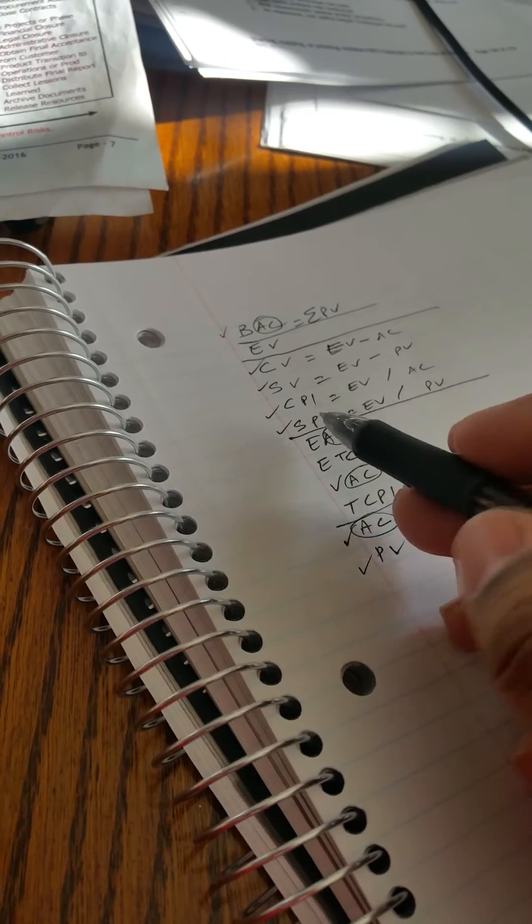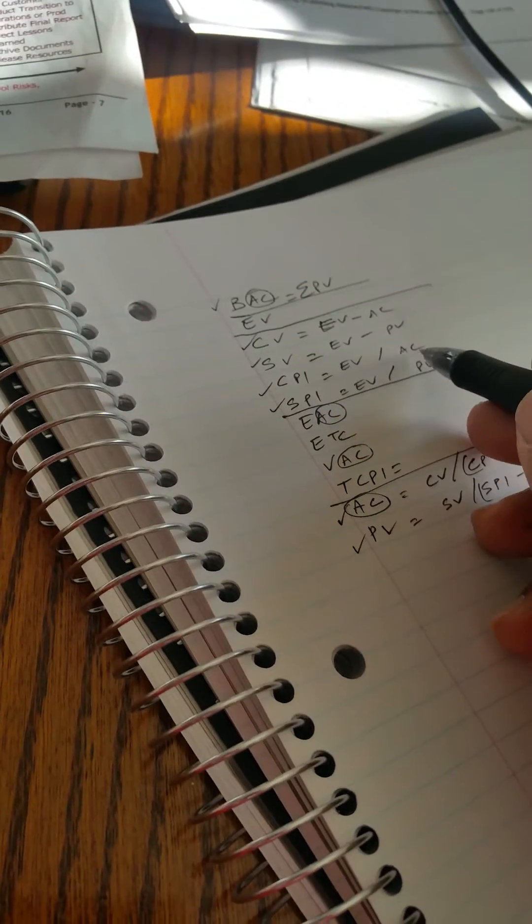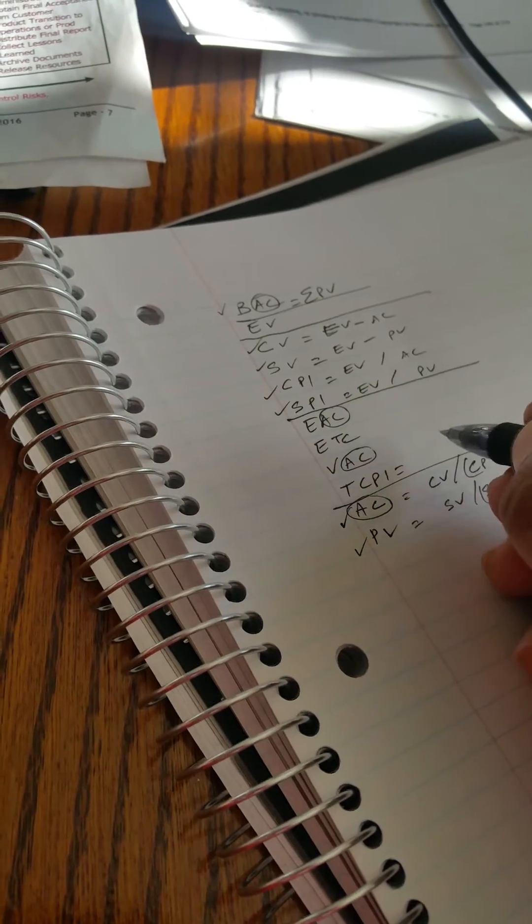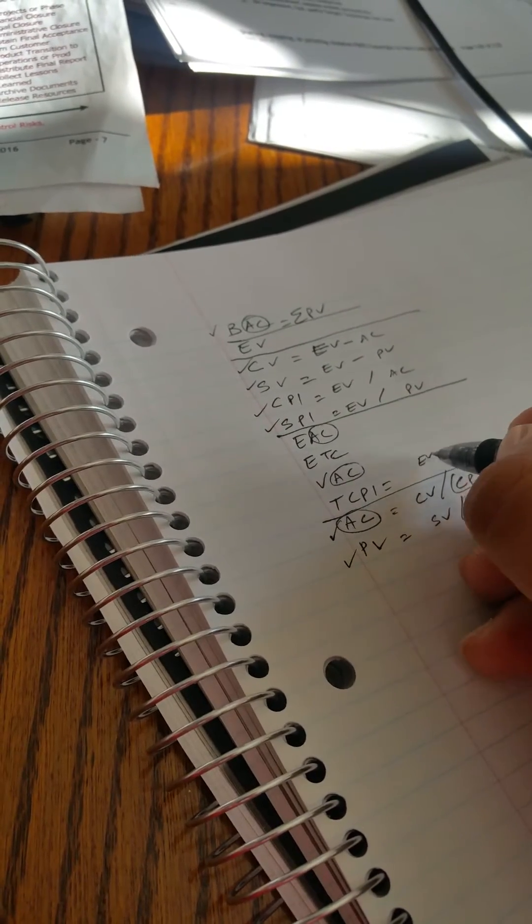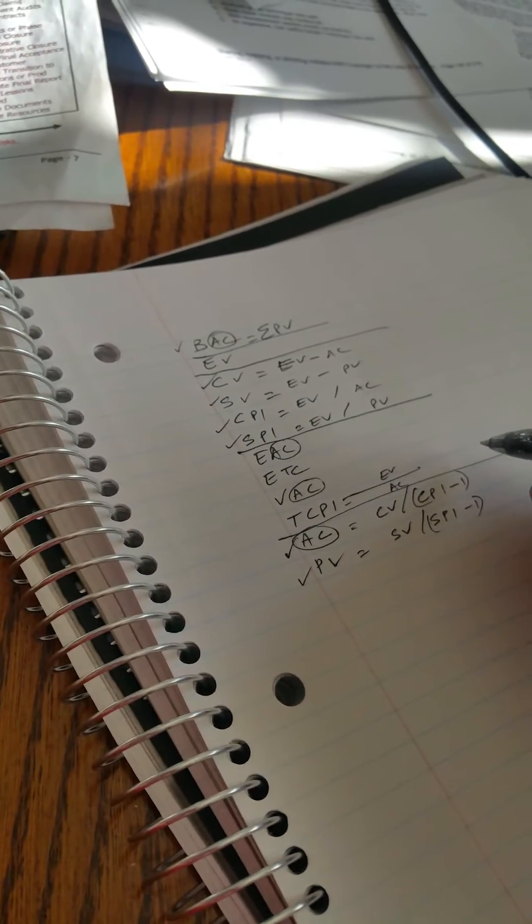So I'm going to go AVAC, and there are actually two formulas on that one, so I'm going to have the second one but put EV and AC on the top and the bottom.